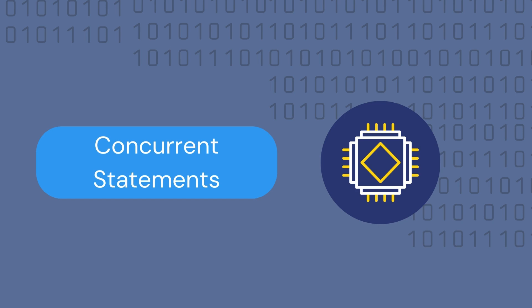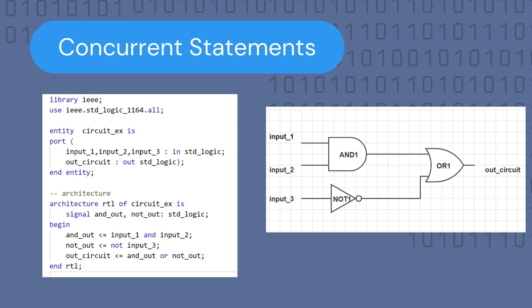This means that all instructions are executed at once. Let's take a look at the following circuit, which contains a number of gates that are all implemented concurrently. The output is instantaneous to changes in the input. This circuit can be expressed in VHDL with the help of concurrent statements. As you can see from the circuit diagram, the OR gate accepts the outputs of the AND and NOT gates. To describe the circuit, we would first need to create the entity.